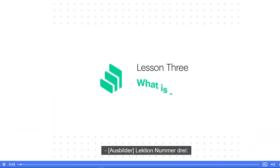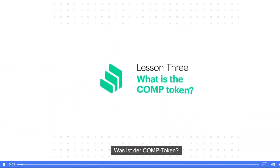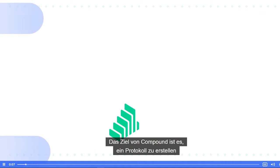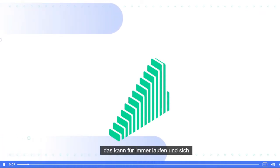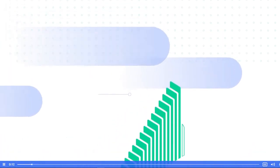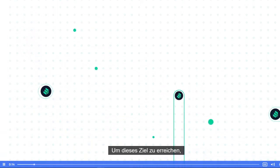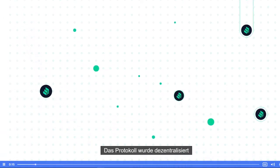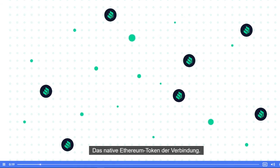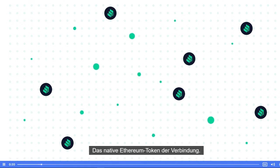Lesson number three: What is the Comp Token? Compound's goal is to create a protocol that can run forever and evolve in entirely new ways. In order to achieve this goal, the protocol was decentralized by creating and distributing Comp, Compound's native Ethereum token.